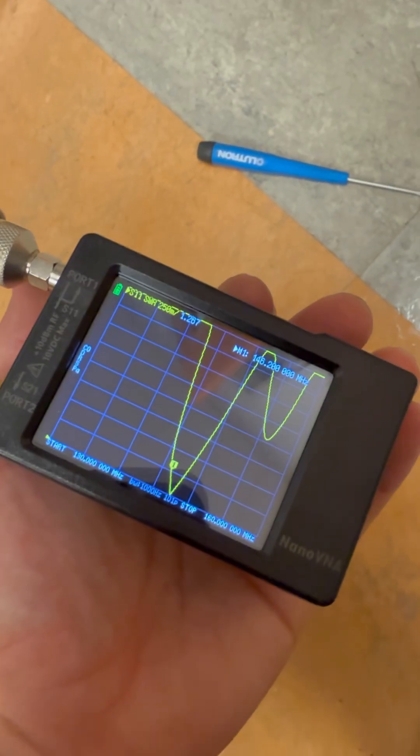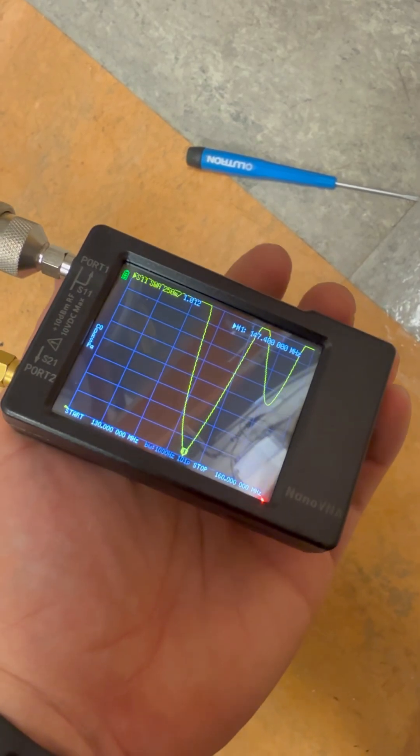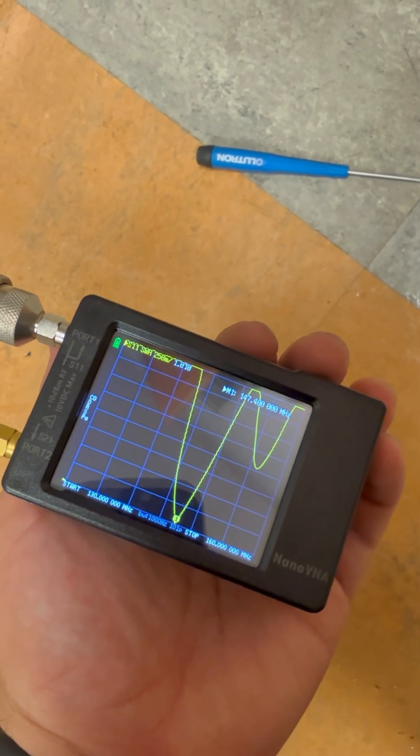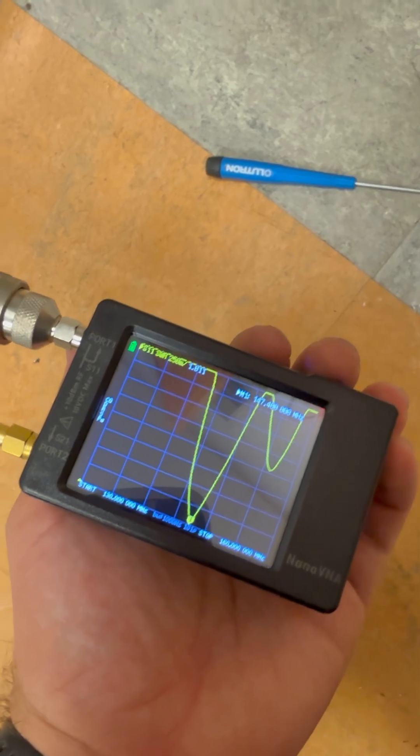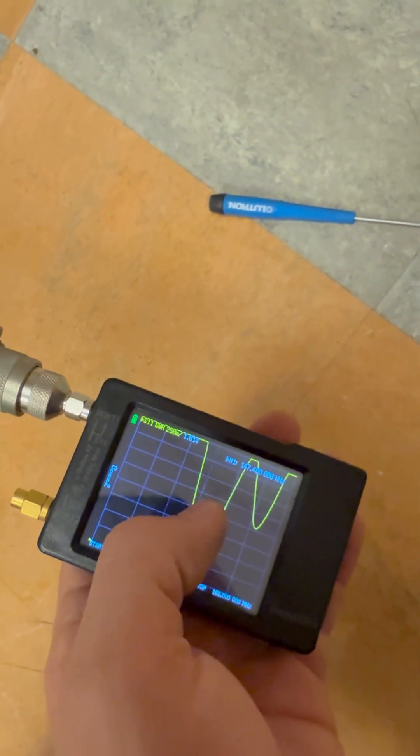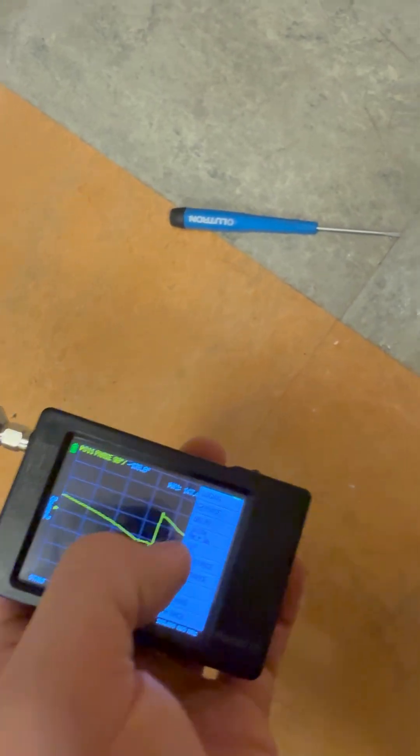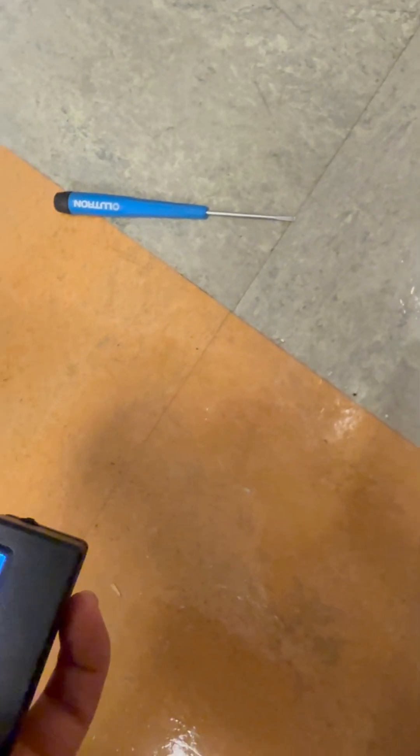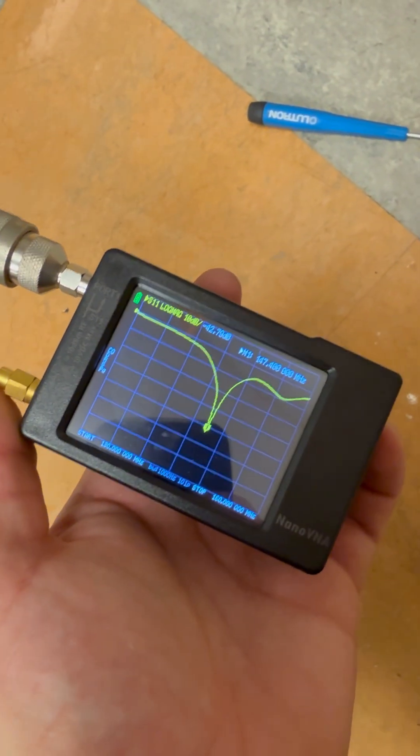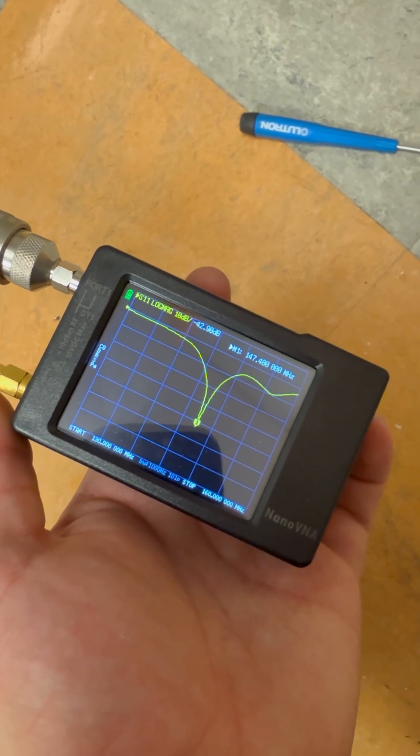Okay, look at the SWR difference now. At 147.4 it's 1.011 and I can adjust these trimmers to move where that resonant point is. And if we wanted to show return loss, there we go, at 147.4 we have a minus over minus 40 dB return loss.